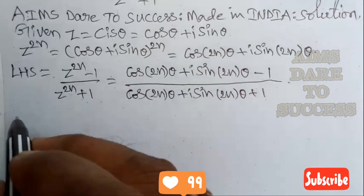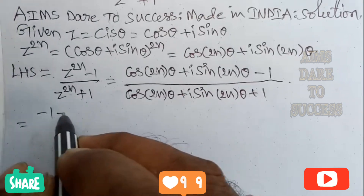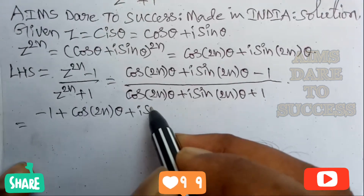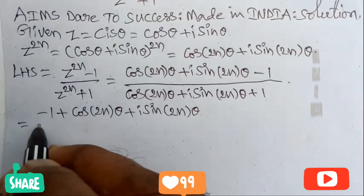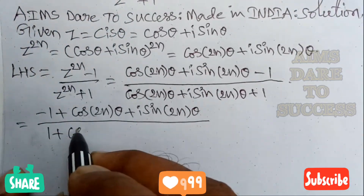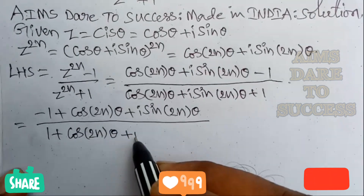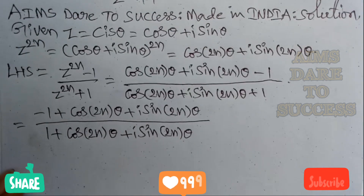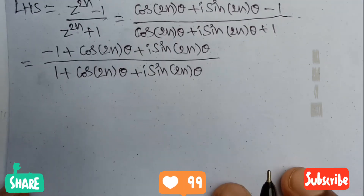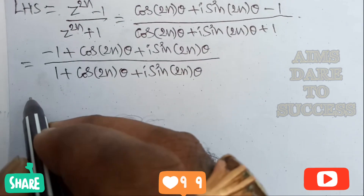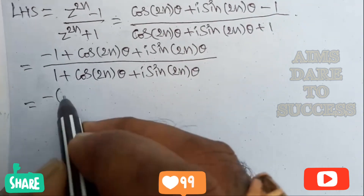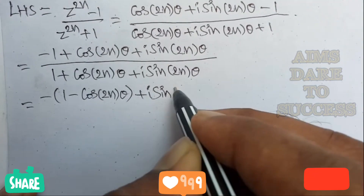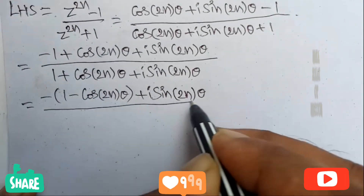Rearranging: minus 1 is brought to the front, so the numerator becomes minus 1 plus cos 2n theta plus i sine 2n theta. According to the formula, minus is taken as common. After taking minus common, that value is related to the formula. Without taking minus common, it is not related to the formula. So, taking minus common: 1 minus cos 2n theta plus i sine 2n theta.